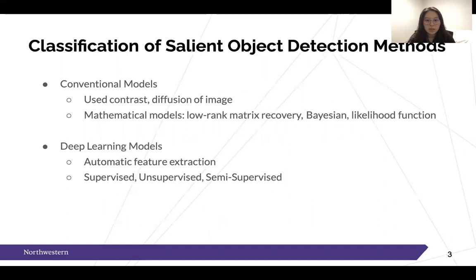There are two big categories in the classification of salient object detection: conventional and deep learning approaches. The conventional or traditional models use basic image properties like contrast and division, and can also involve mathematical models. The deep learning models have learning algorithms involved and an automated process for feature extraction. Researchers feed an image dataset, train the model, and extract features. As with typical machine learning models, salient object detection with deep learning also has supervised, unsupervised, and semi-supervised methods.